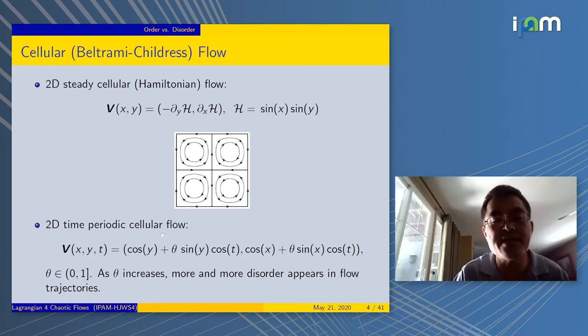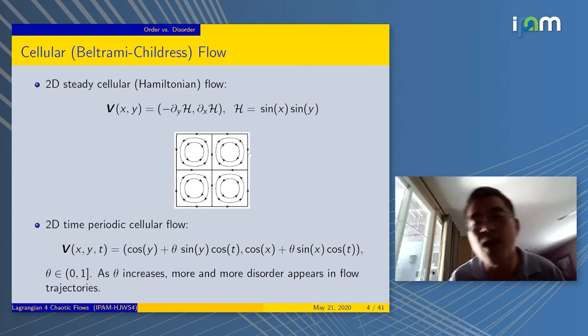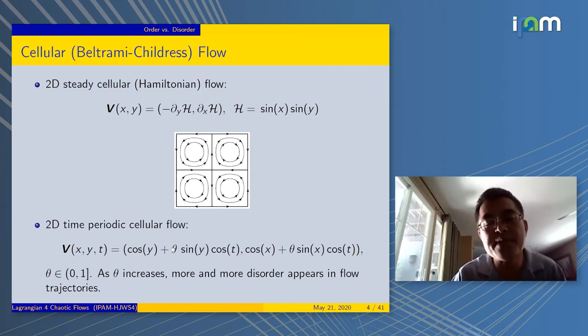If θ equals zero, we're back to steady flow. More or less, if you do the phase portrait, it's going to be like this, except you rotate it by π/4. I'm going to show you what happens when θ is increased, especially if you increase from zero to one.